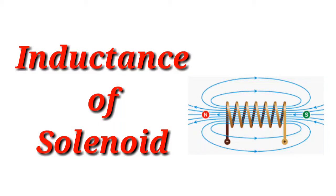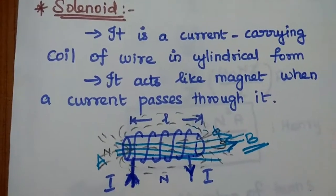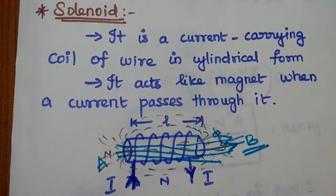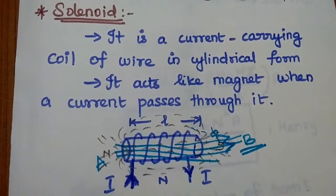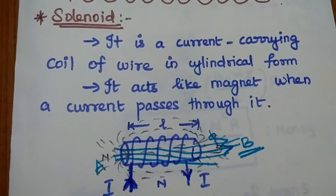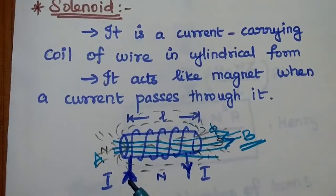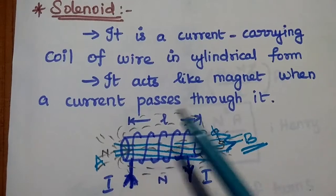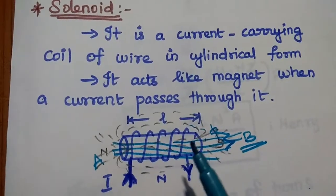Dear students, now we are going to discuss about inductance of solenoid and its problems. Let's start with the definition of solenoid. It is a current carrying coil of wire in cylindrical form. It acts as a magnet when a current passes through it. This is the structure of solenoid, which is having the coil of wire in cylindrical form. Whenever the current passes through the coil, the magnetic flux linkage is formed around it, so it can act as a magnet.